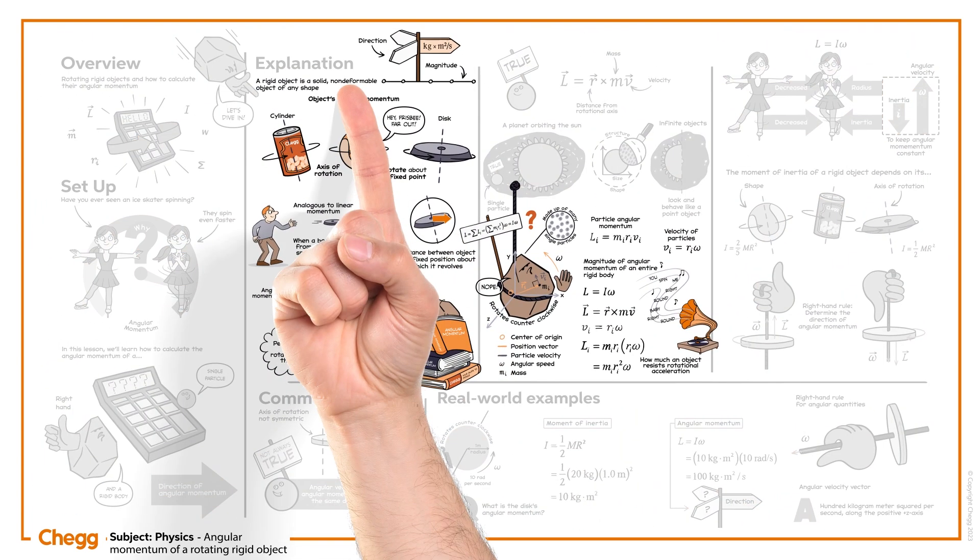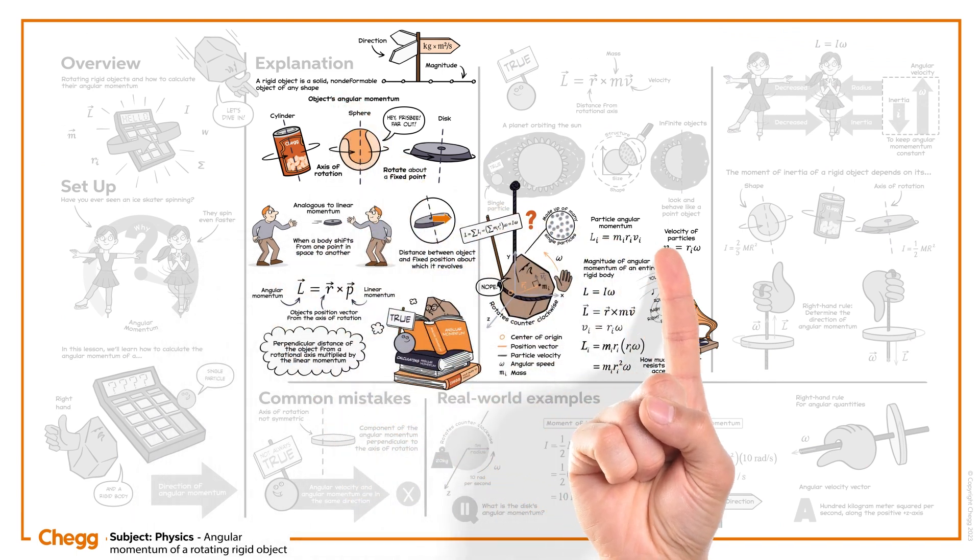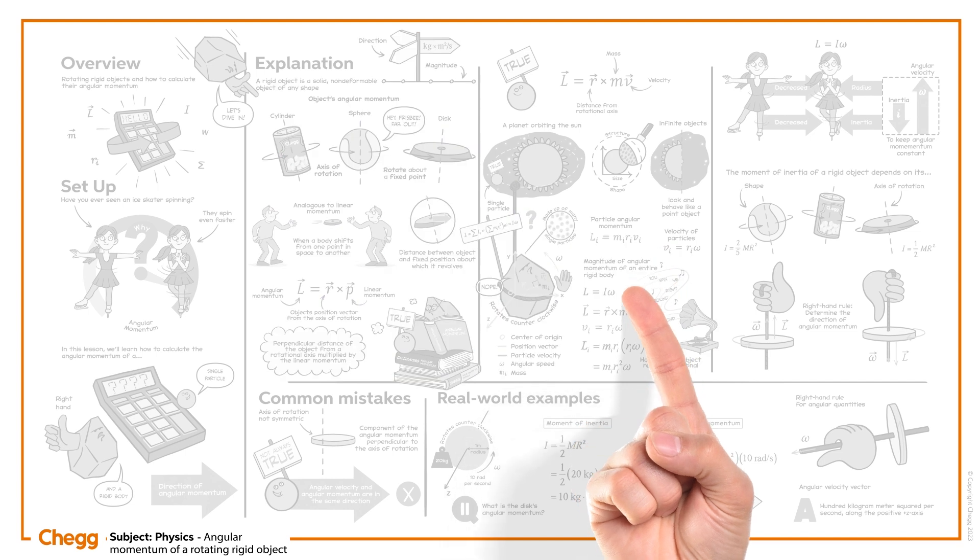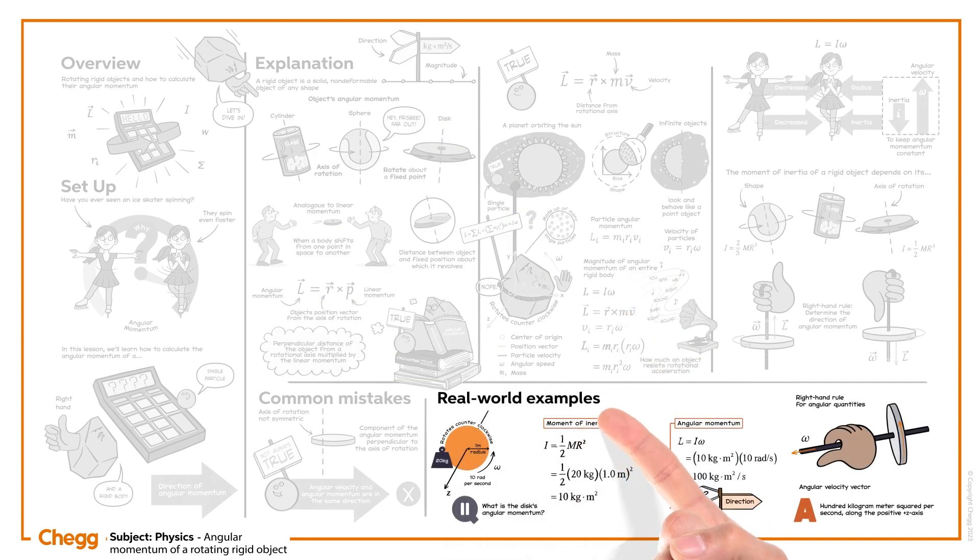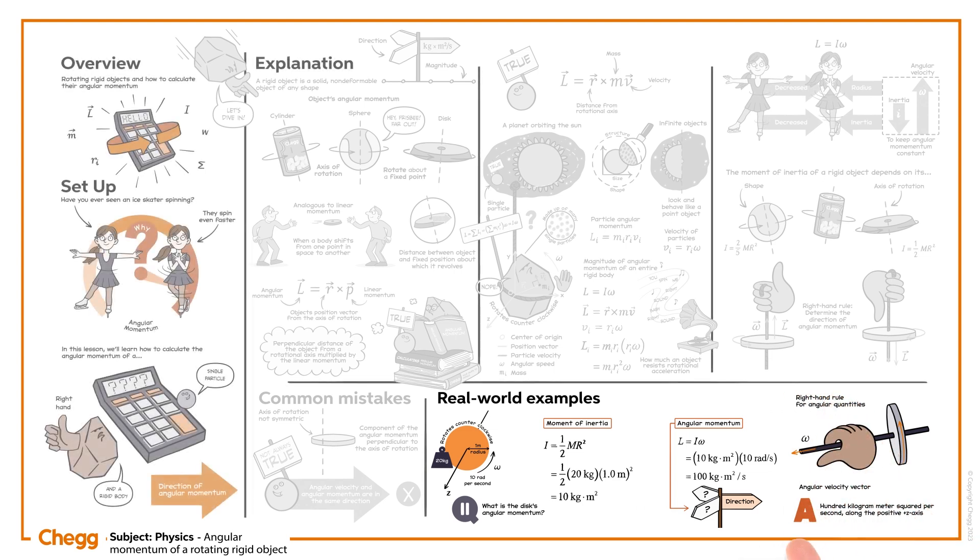Hopefully this video helped you understand how to determine angular momentum and its direction for a rotating rigid object. Going forward, you should be able to use these equations to calculate the angular momentum of single particles and a range of rigid objects. Thanks for watching.